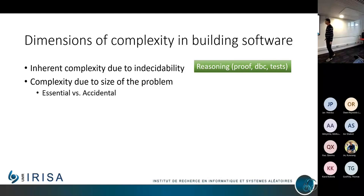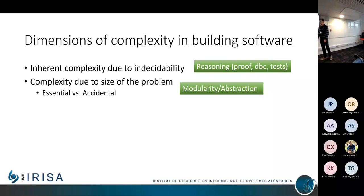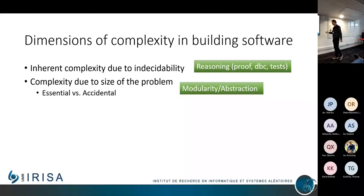There is a complexity due to the size of the problem — the second dimension — with the distinction already made by Fred Brooks between essential complexity, which is having to deal with many variables, functional points, and synchronization, and accidental complexity, which is due to using the wrong technology or having to stay compatible with legacy software or legacy practices. The only way to deal with complexity due to size, in any engineering discipline, is basically modularity and abstractions — cutting your difficult problem into small pieces that you can understand and then assemble.